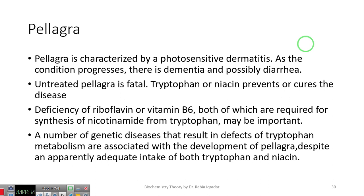Deficiency of niacin causes pellagra. Pellagra is characterized by a photosensitive dermatitis. It means skin infection which is aggravated by light. As the condition progresses, there is dementia and possibly diarrhea. First of all, skin will be affected by vitamin B3 deficiency. And just move on, it will affect the brain which will cause dementia, memory loss and possibly diarrhea will affect the GIT.